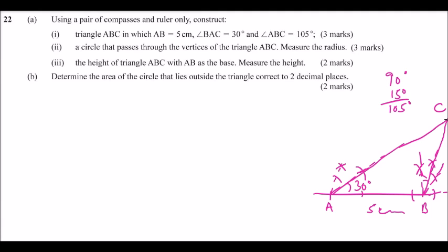A circle that passes through the vertices A, B, C. To get a circle that touches the three vertices of a triangle, we bisect two sides. Where the two lines of bisection meet, that is the center of the circle.